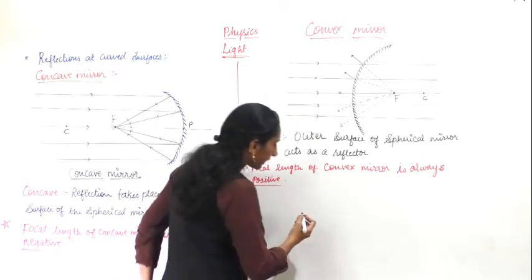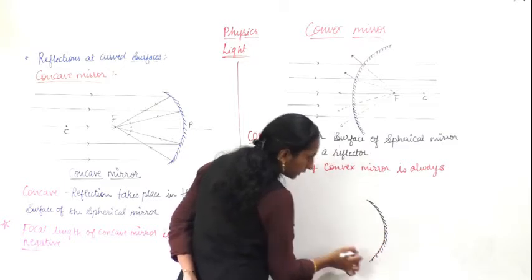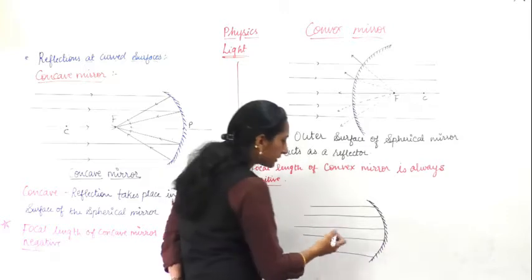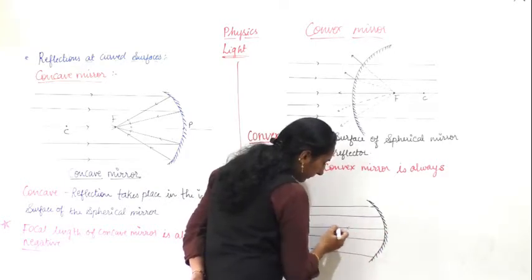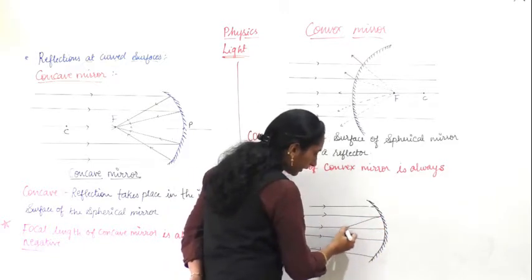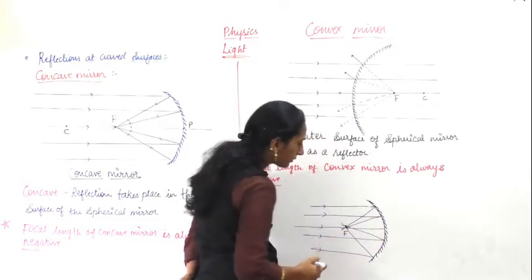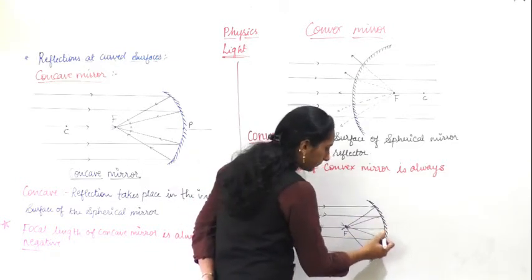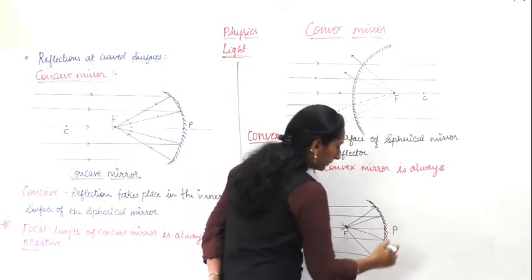Let me explain with a drawing. This is the concave mirror and this is its reflecting part. Many light rays fall on the curved surface and reflect back. All the points where rays reflect back meet at a single point, and this point is called the focus. The middle point of the concave mirror is called the pole P, and this other point is the focus.